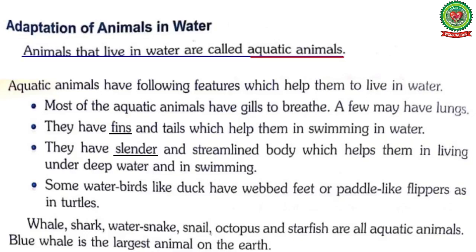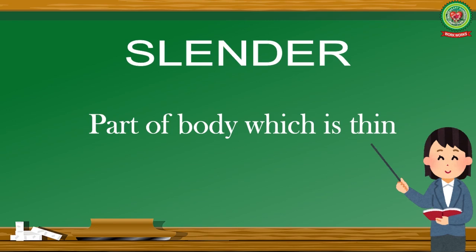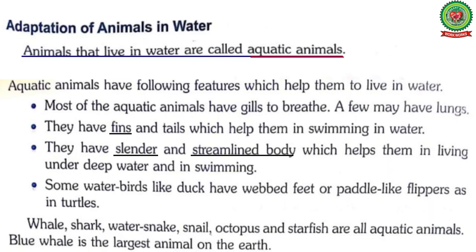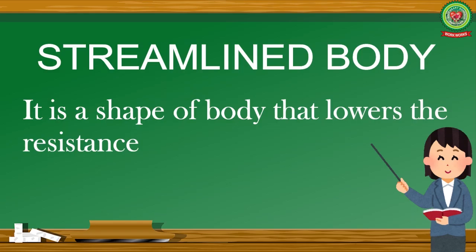They have a slender and streamlined body which helps them in living under deep water and in swimming. Underline the word 'slender' and write its meaning: part of the body which is thin. Underline 'streamlined body' and write its meaning: a shape of body that lowers resistance conditions.